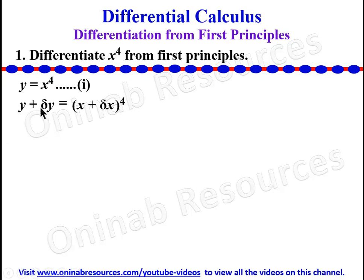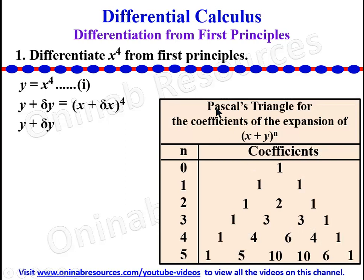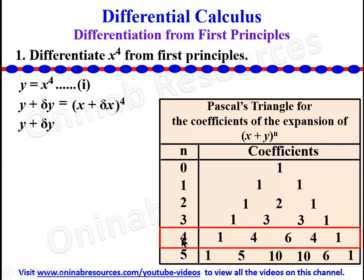Here we are going to expand the right hand side while we maintain the left hand side. We need Pascal's triangle to help us get the coefficients of this binomial expansion. Pascal's triangle gives the coefficients of the expansion of (x + y)^n. You can check videos on our YouTube channel or visit the link to get videos on Pascal's triangle for expansion of binomials.